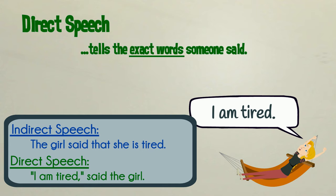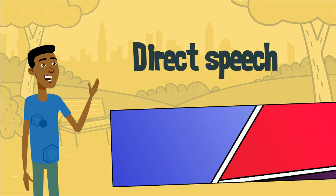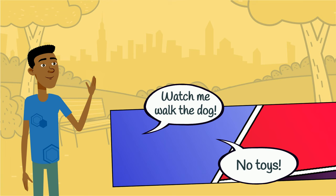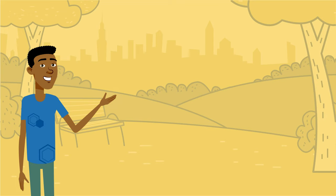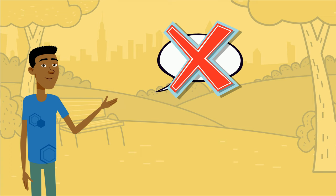In comics, direct speech is shown using speech bubbles. These visual representations let us know what is said and who said it. In other texts, such as narratives, reports and newspaper articles, speech bubbles are not used. Instead, speech marks are.